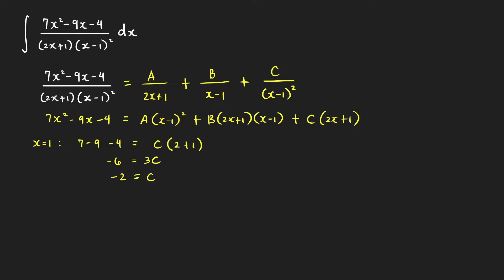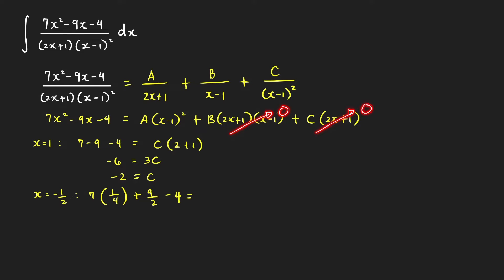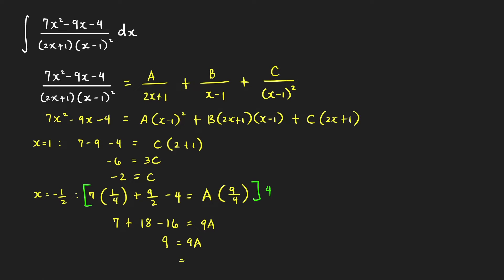Now let's plug in another value of x. We can make the factor (2x plus 1) equal to 0 by choosing x equals negative 1/2. Plugging in x equals negative 1/2, we get 7 times (1/4) plus 9/2 minus 4 equal to A times (negative 3/2)², which is 9/4. Multiplying both sides by 4 gives 7 plus 18 minus 16 equal to 9a, so 9 equals 9a, and a equals 1.